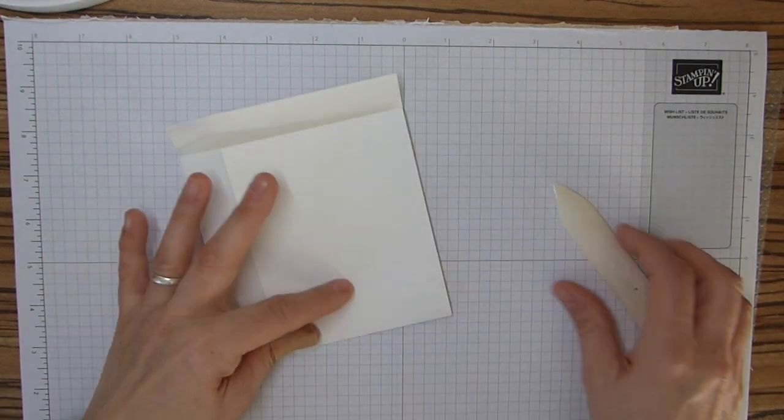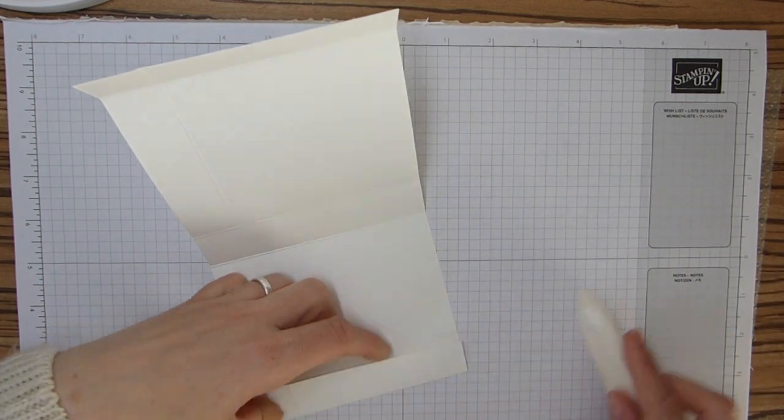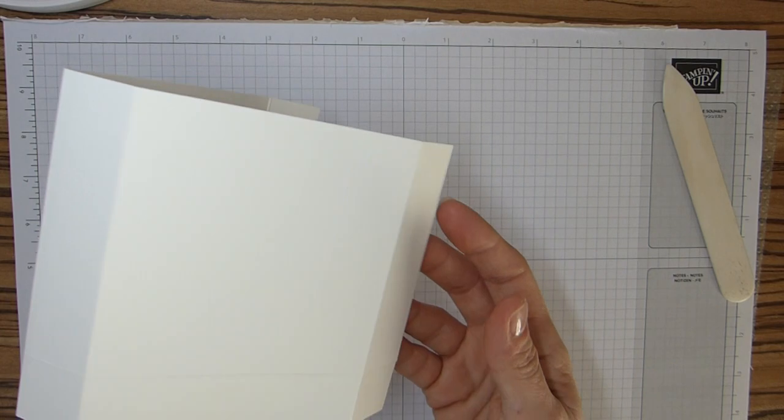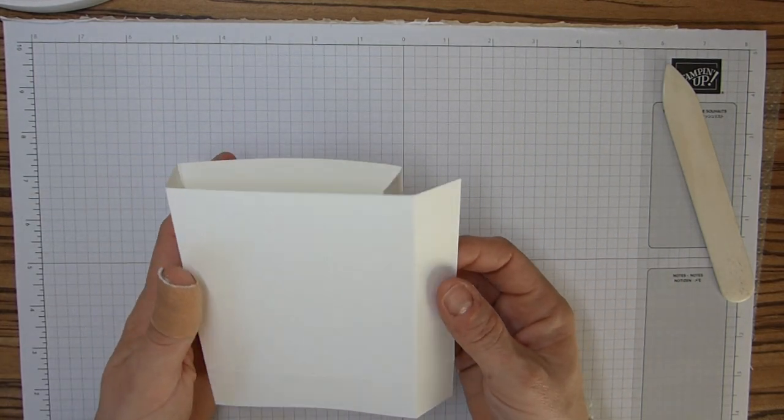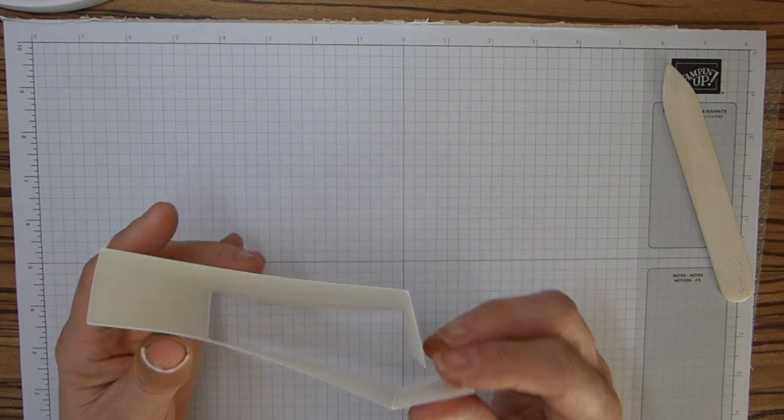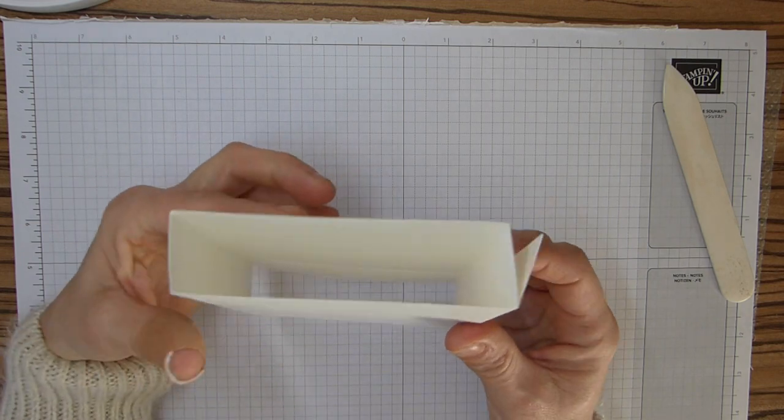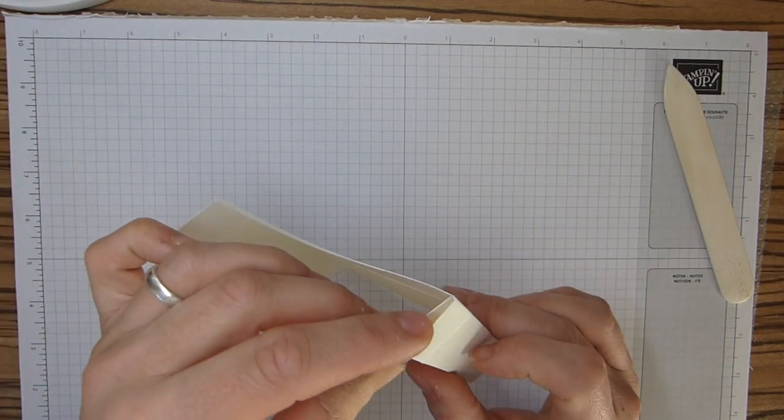Pretty simple box here that you could put chocolates in, some jewelry, anything like that. We're going to decide which way around you want your box to be. Whichever piece you use to overlap will be the bottom, so you've got the join at the bottom.